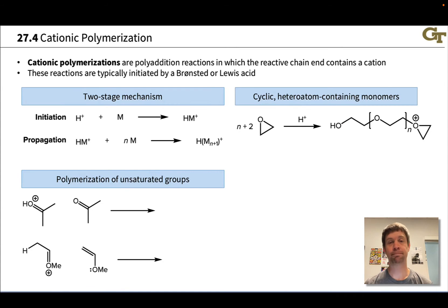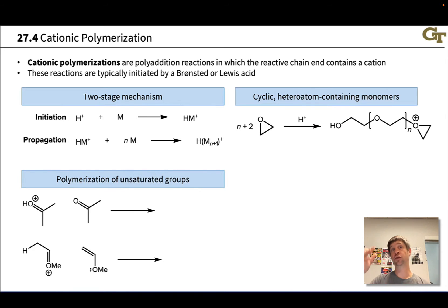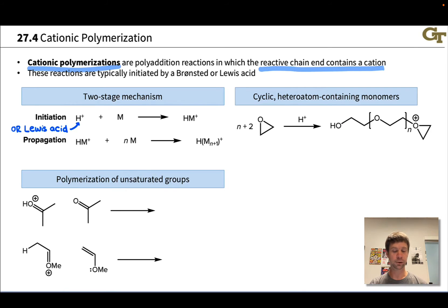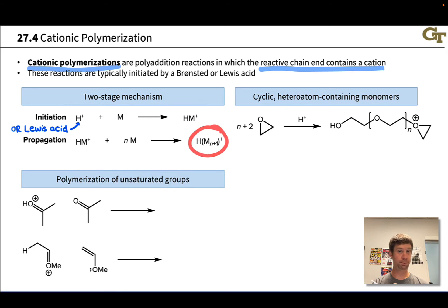Cationic polymerization is a polyaddition reaction in which the reactive chain end contains a reactive cationic ion. To generate that cation, we typically use a Brønsted or Lewis acid initiator. The acid is electrophilic and pulls electrons from the monomer, creating a cationic ion in the monomer structure, which then gets added to by another monomer. There's a two-stage mechanism: the initiator H⁺ reacts with the monomer to create a cationic ion, and that cationic species then adds monomer molecules to create the growing polymer chain with a cation on the end.